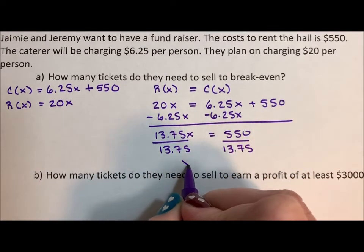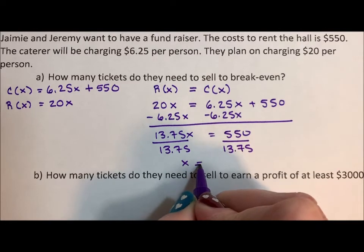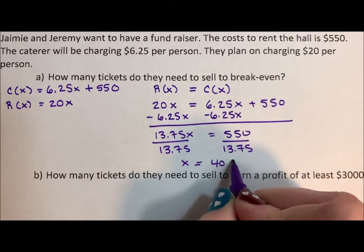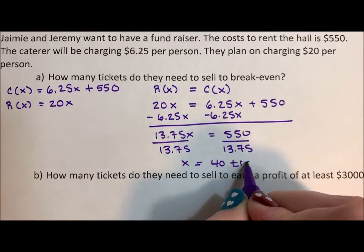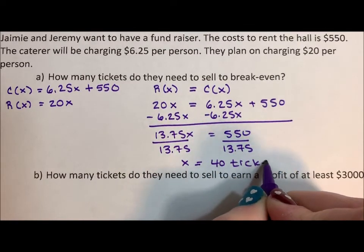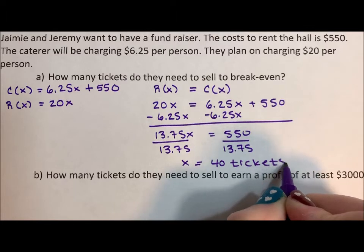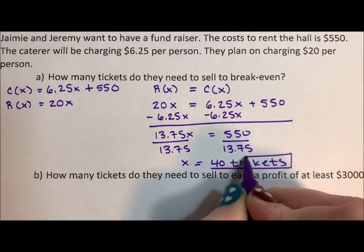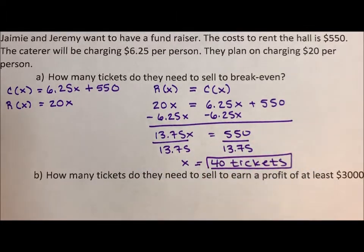Divide by 13.75 and get that x is equal to 40 tickets. Making sure we label our answer — 40 tickets to break even. 40 tickets will make the cost and the revenue the same.